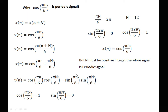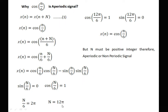To equate back to the original, cos(πN/6) should equal 1 and sin(πN/6) should equal 0. This is possible when πN/6 = 2π, giving N = 12. N = 12 is a positive integer. Substituting N = 12 gives sin(πN/6) = 0 and cos(πN/6) = 1, confirming x(n) = cos(πn/6) is satisfied. Since N = 12 is a positive integer, this signal is periodic. The previous signal was aperiodic because N came out as 12π, which is not a positive integer.